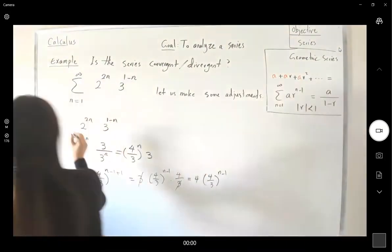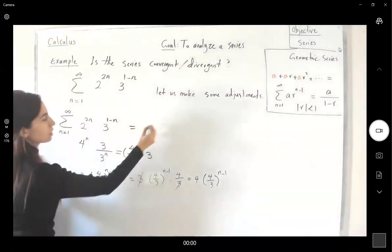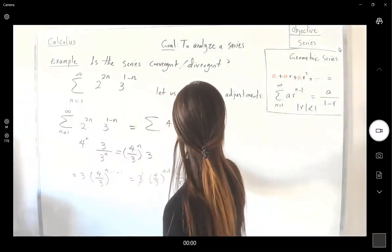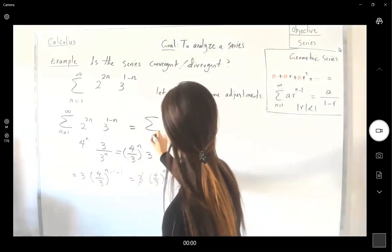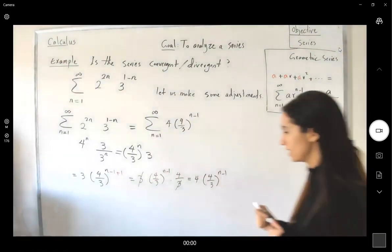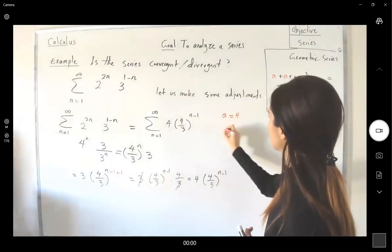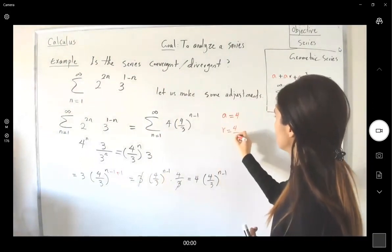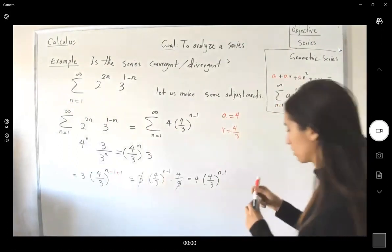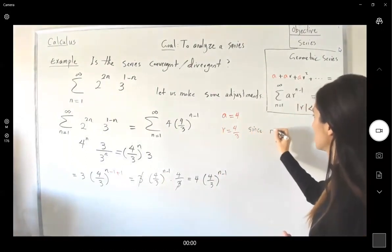So this series from n=1 to infinity is 4 times (4/3)^(n-1). The first term equals 4, and it goes to infinity. It's a great example.